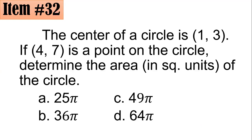Item 32. The center of a circle is (1, 3). If (4, 7) is a point on the circle, determine the area in square units of the circle. Is it 25π, 36π, 49π, or 64π?